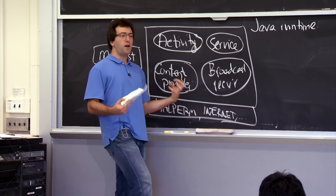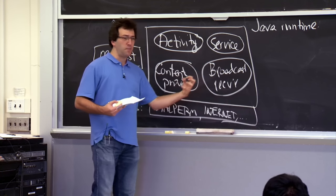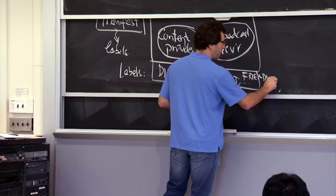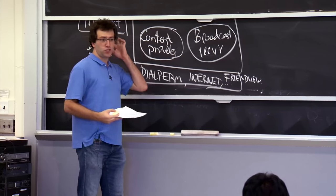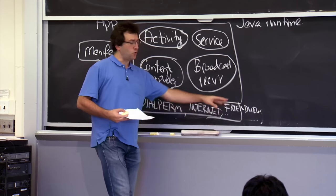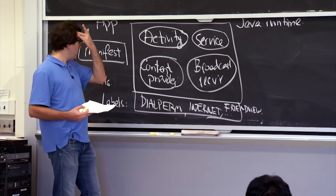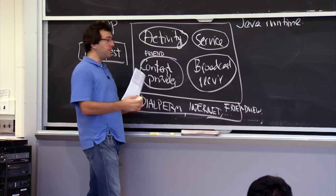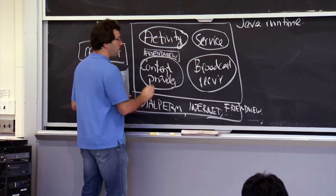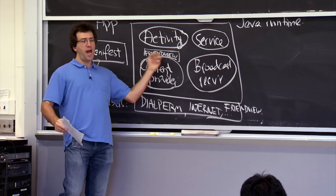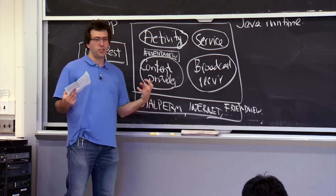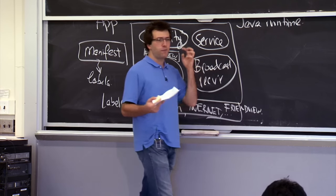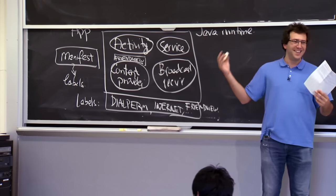For example, maybe you have a 'friend view' privilege allowing you to view the locations of your friends. You might put this label on a content provider — the database storing location of all your friends. Anyone wanting to access this database must have this label in their privilege set. You can think of these labels as generalized user IDs or group IDs from Unix, except they're arbitrary strings, which makes them slightly more flexible — you don't run out of them or worry about who gets number 25.